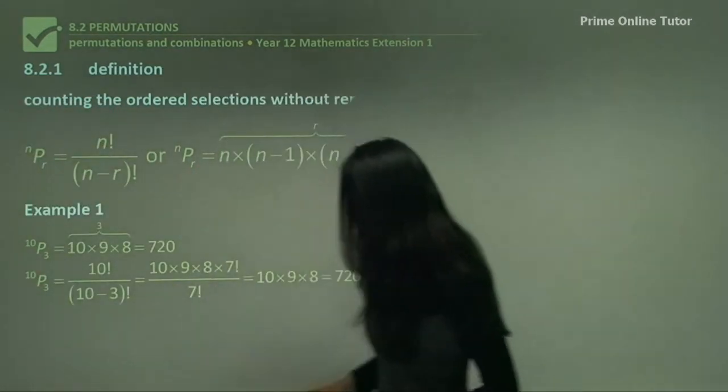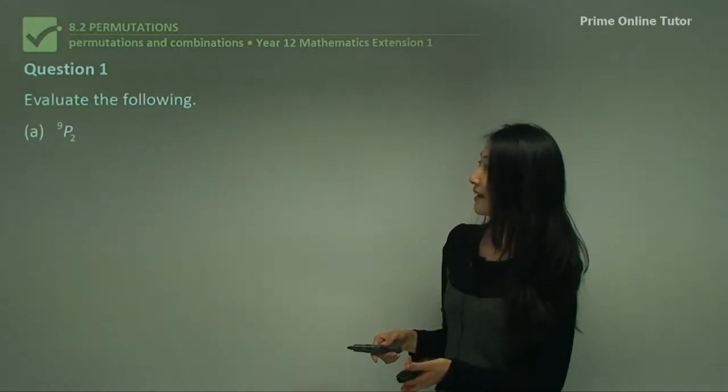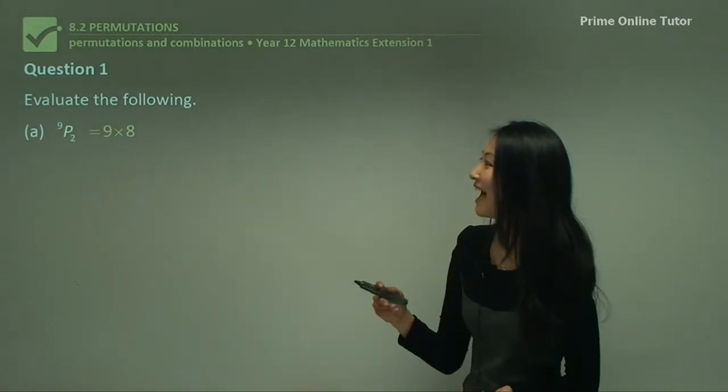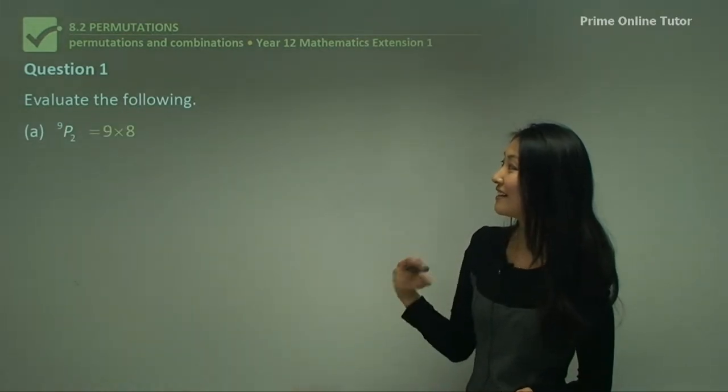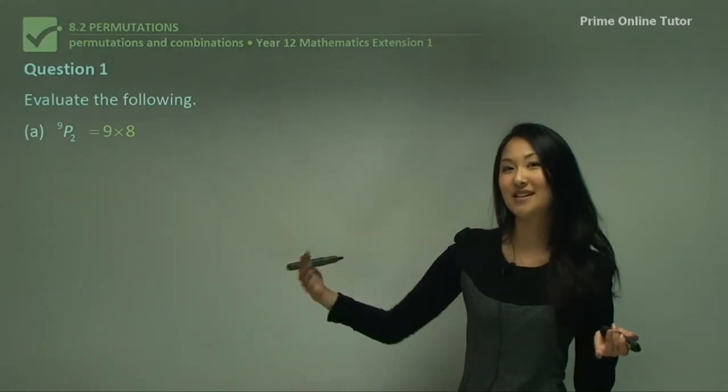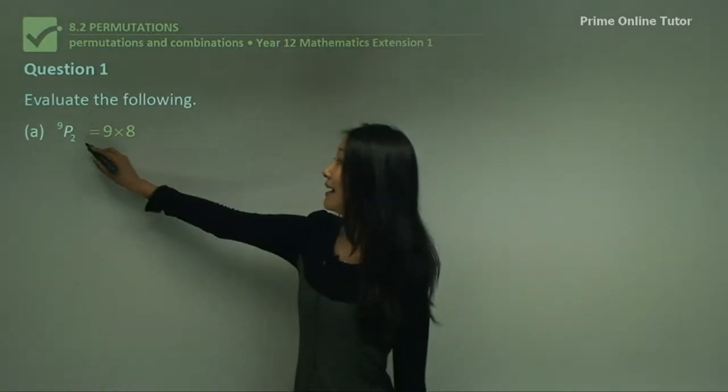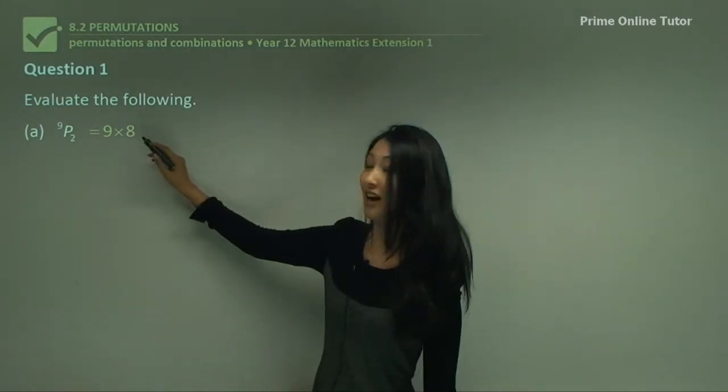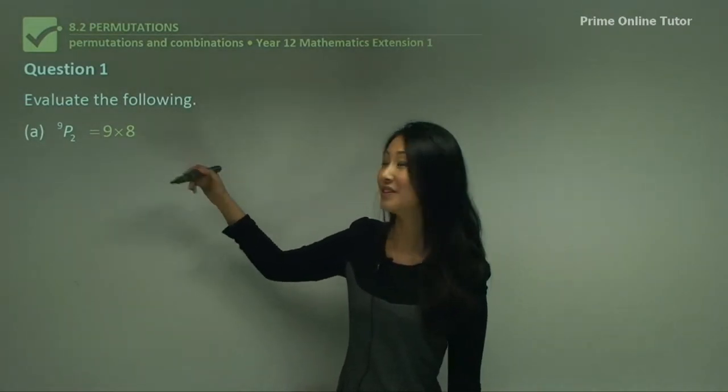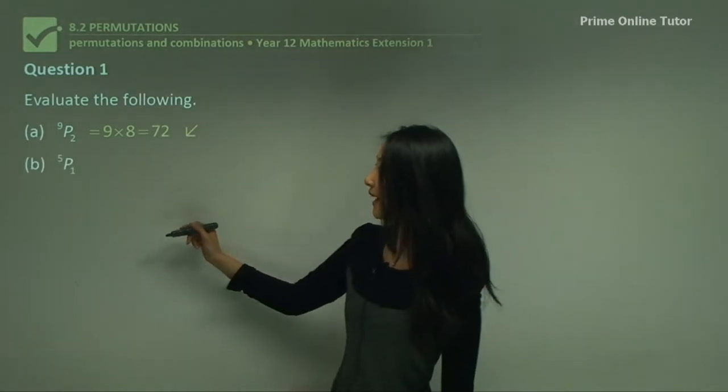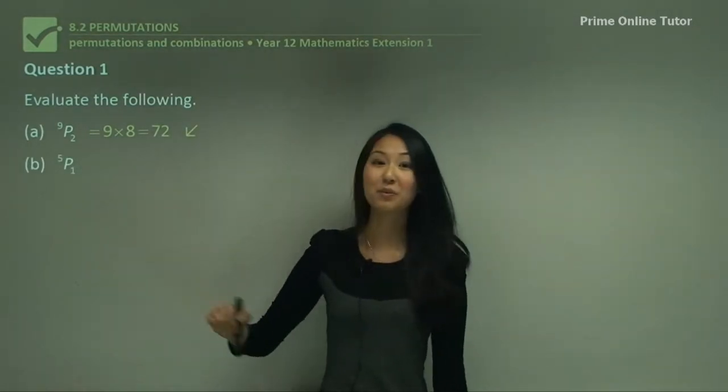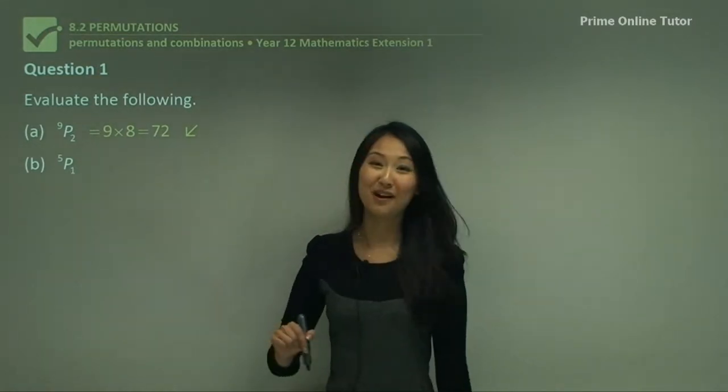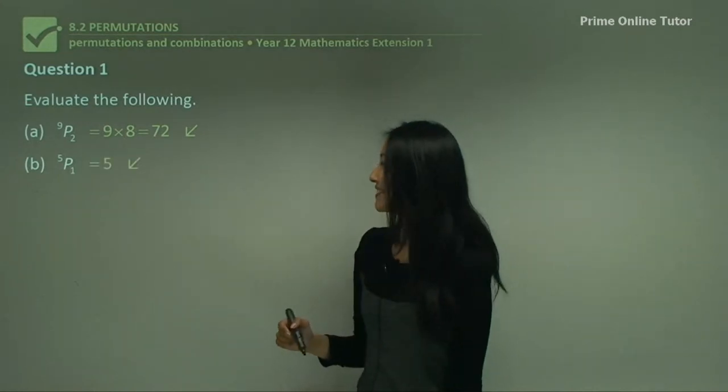Let's have a look at question 1. Here I want to evaluate a couple of these equations. We have ⁹P₂, so that means 9 factorial: 9×8×7 and so on, but r equals 2, which means I only need the first two numbers. That's just 9×8, which equals 72. What about ⁵P₁? That's 5 factorial, but r equals 1, so I only need the first number, which equals 5.